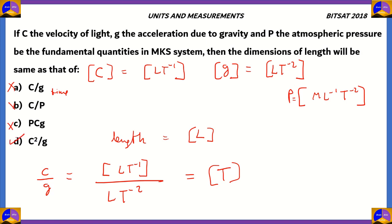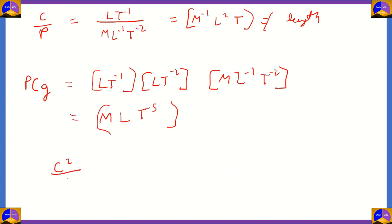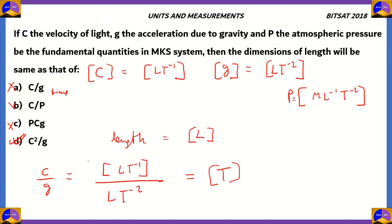So we now know that the final answer is option D — c squared by g. Let's prove it: c squared is L²·t⁻² divided by g, which is L·t⁻². The t⁻² terms cancel, and L² divided by L gives you just length. So that's why option D is the correct answer. The key insight from option A is that if we squared the numerator, we could eliminate t⁻² and the L would remain — that's the basic idea behind option D.